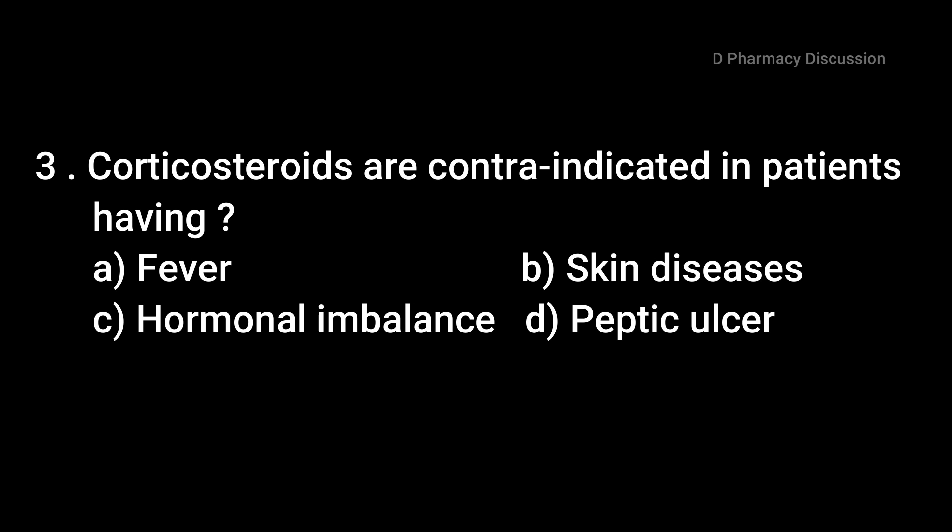Question number three: corticosteroids are contraindicated in patients having — option A: fever, B: skin diseases, C: hormonal imbalance, and option D: peptic ulcer. The correct answer is option D, that is peptic ulcer.